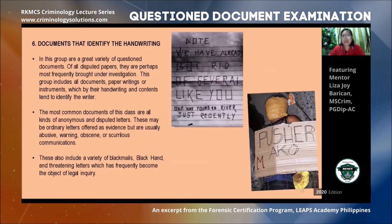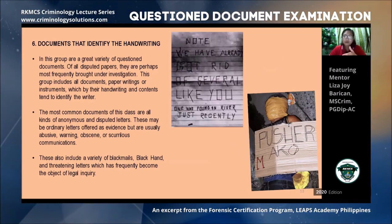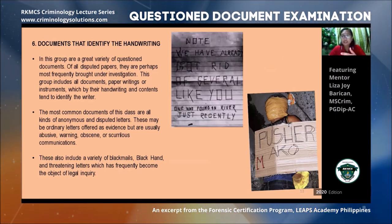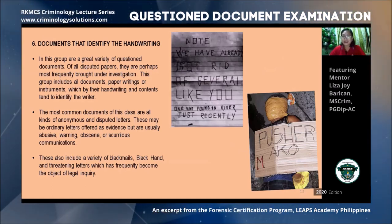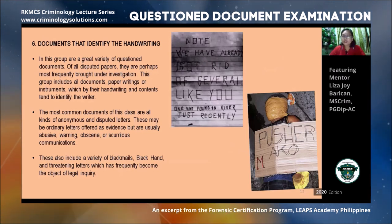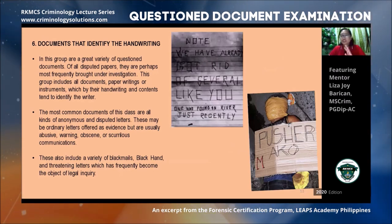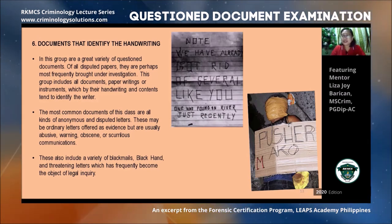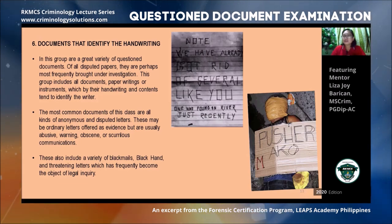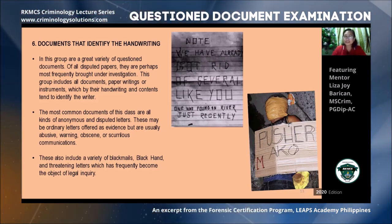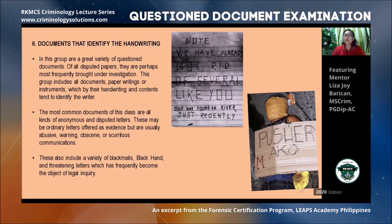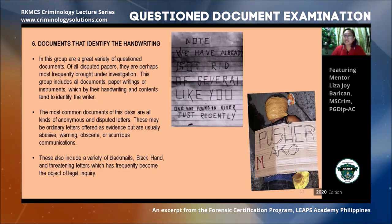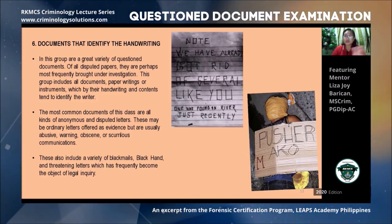The sixth class is documents that identify the handwriting — these become questioned documents because we do not know who the author is, and we need to determine the author of the handwriting or document. A common example is threat letters, anonymous letters, or what we call poison pen letters. As shown in the picture, markings found at a crime scene can be examined by a document examiner to identify the handwriting and establish a connection to a particular person.